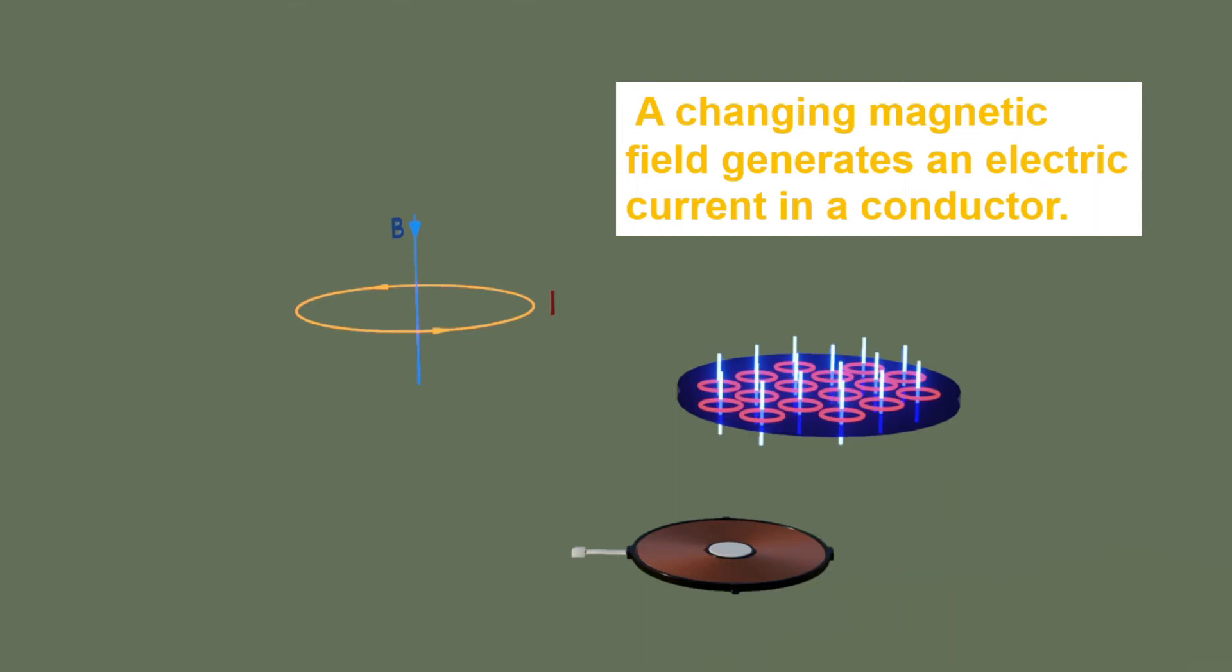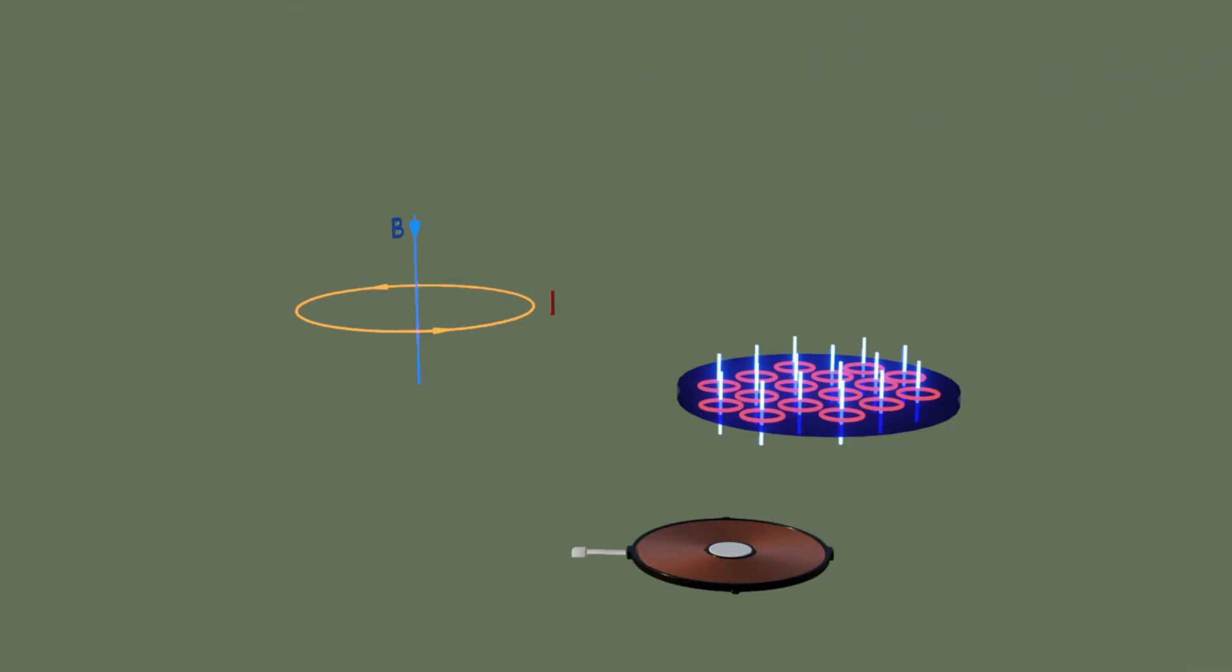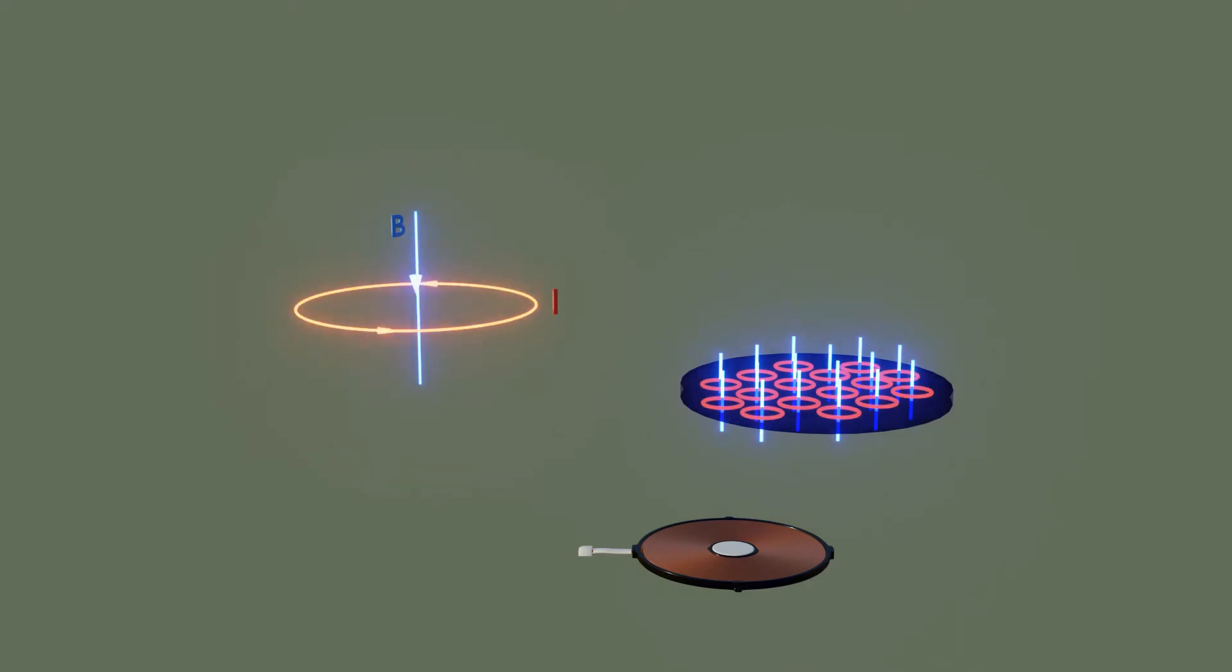As shown in the picture, when the pan is put in this changing magnetic field, the electrons in the pan will move in a swirling way and form closed loop currents. These currents look like eddies or whirlpools, so they are called eddy currents.